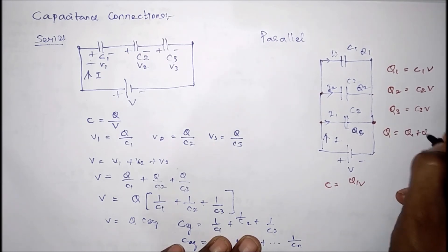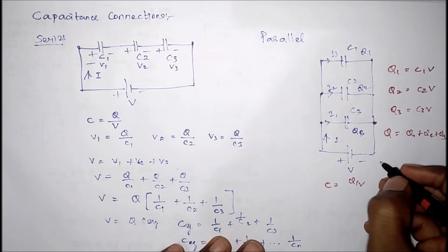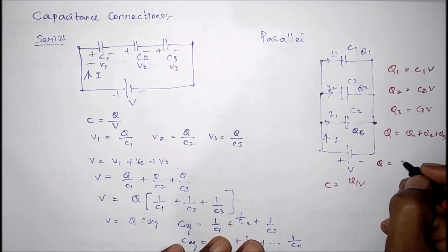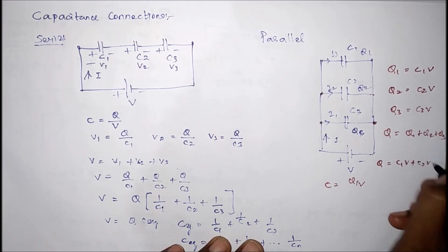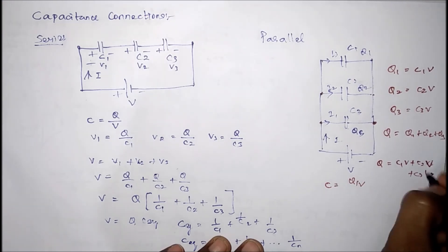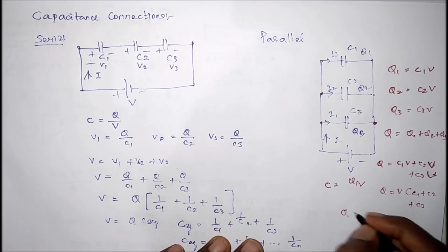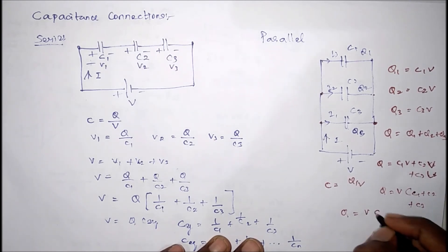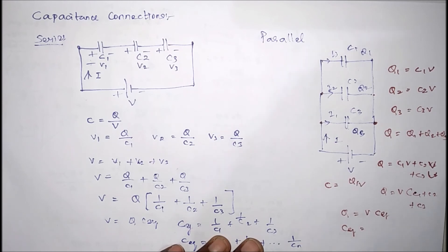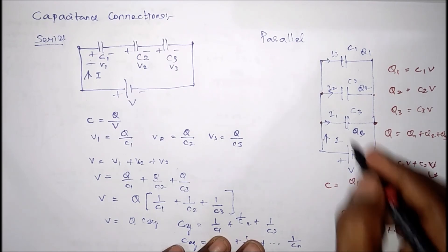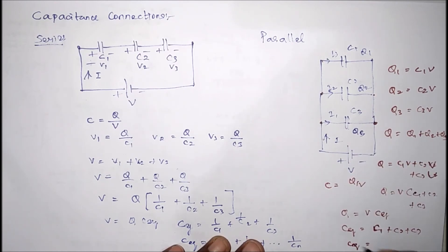Therefore Q1 equals C1 times V, Q2 equals C2 times V, and Q3 equals C3 times V. The total charge Q equals Q1 plus Q2 plus Q3. Substituting, Q equals C1·V plus C2·V plus C3·V. Taking V as common, Q equals V into (C1 plus C2 plus C3). So C-equivalent equals C1 plus C2 plus C3. If the circuit has n number of capacitances, C-equivalent equals C1 plus C2 up to Cn.